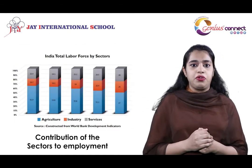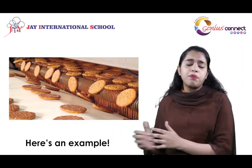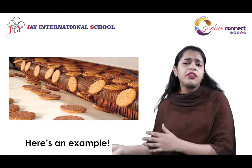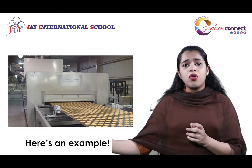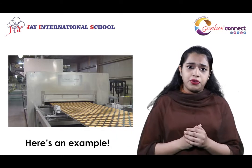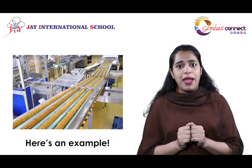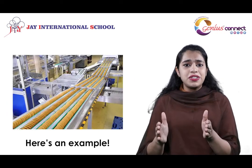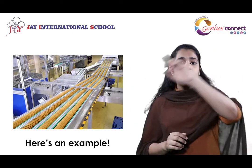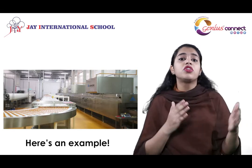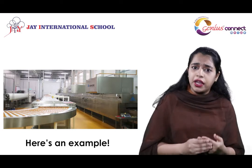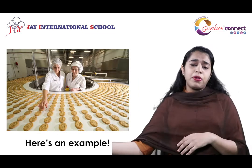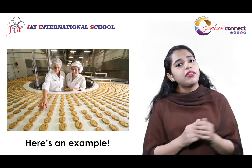For example, in the production of a biscuit: the primary sector produces wheat, sugar, and other essential raw materials. The secondary sector procures these from the primary sector, then processes and manufactures them into the biscuit packet. After that, a truck takes the biscuit packet from the factory to the market — that is the job of the tertiary sector. Similarly, branding, advertising, and marketing for that biscuit are all handled by the tertiary sector.